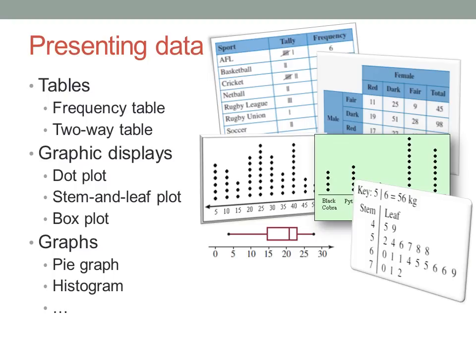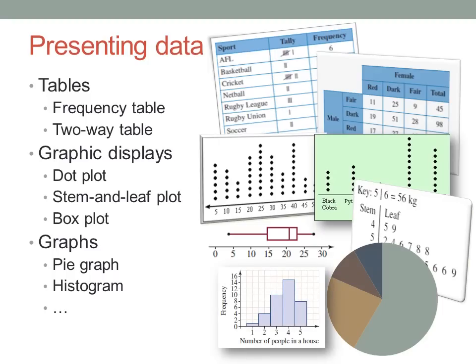And then there are graphs. Pie graphs are useful when there is some concept of a whole, when the total of all the categories is in some way the total of all possible options. Histograms are good for comparing the relative frequencies of each category, or group, of scores.